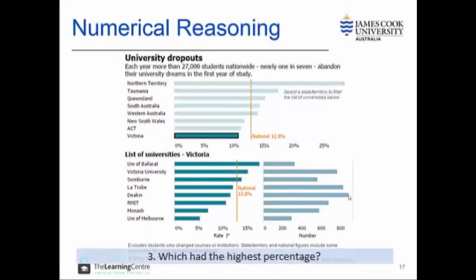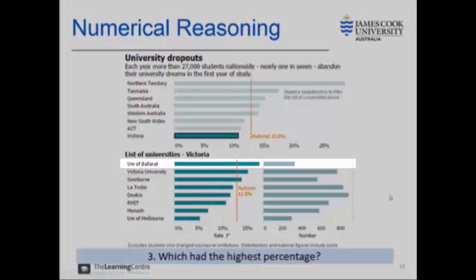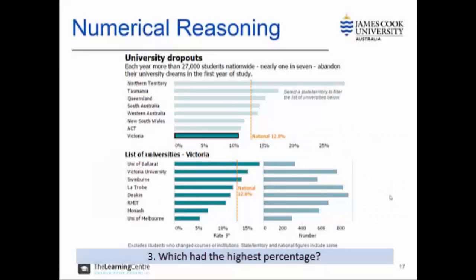The third question asks which had the highest percentage. Here we need to ensure we focus on the correct element of the graph — the percentage or rate. The University of Ballarat has the highest percentage here.